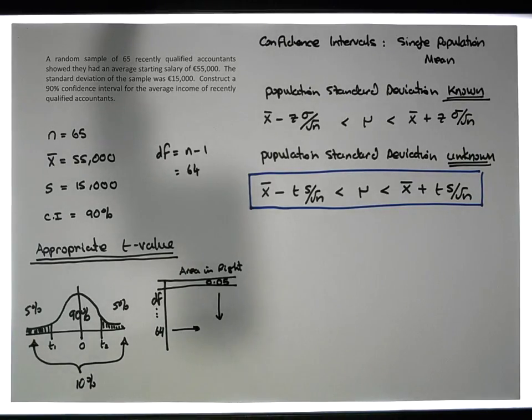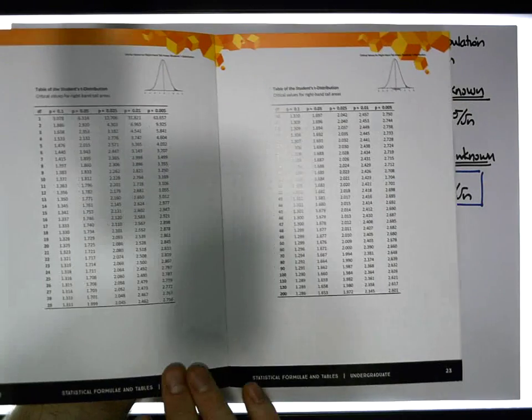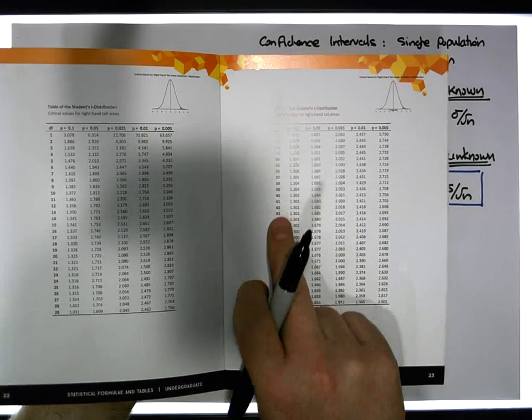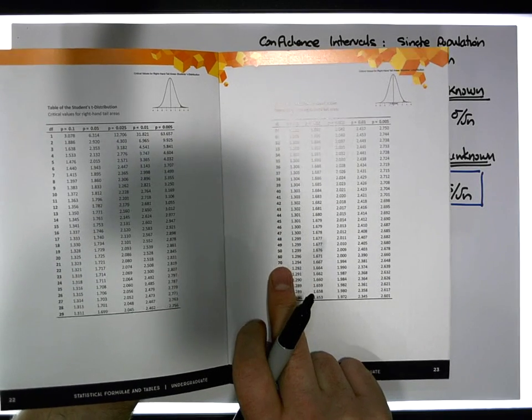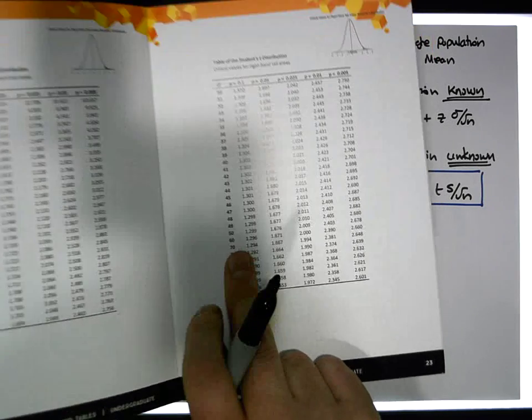Now I'm looking for degrees of freedom of 64. I have 60 and 70 in the table, and the area in the right tail. So it's one of these values on these particular rows, between 60 and 70.